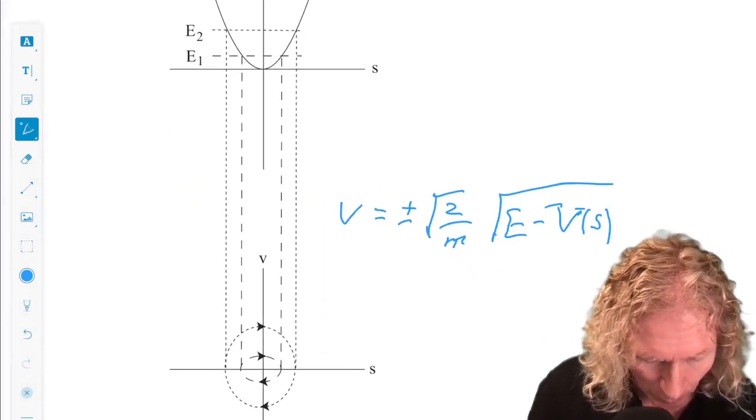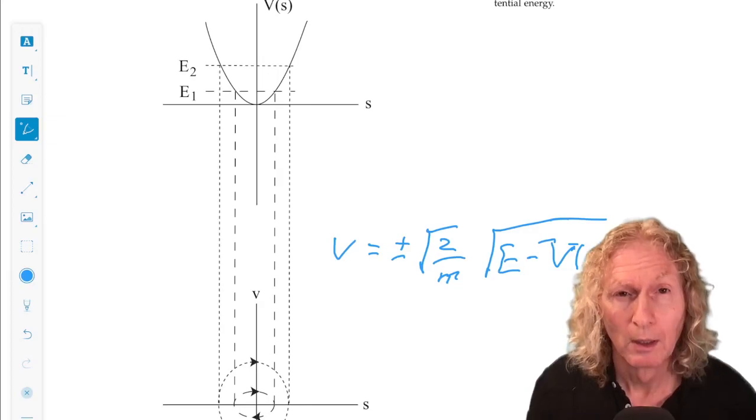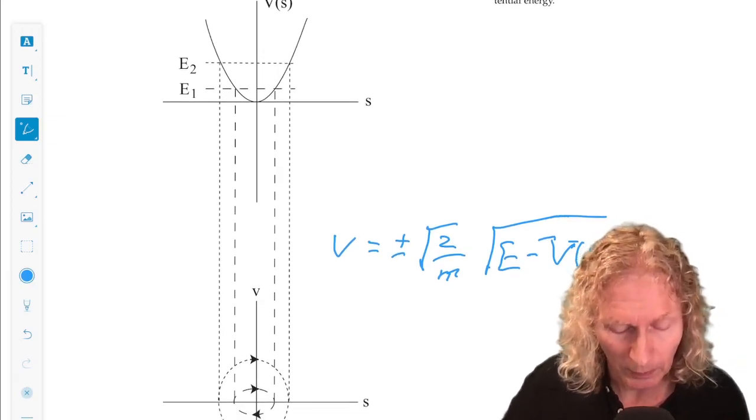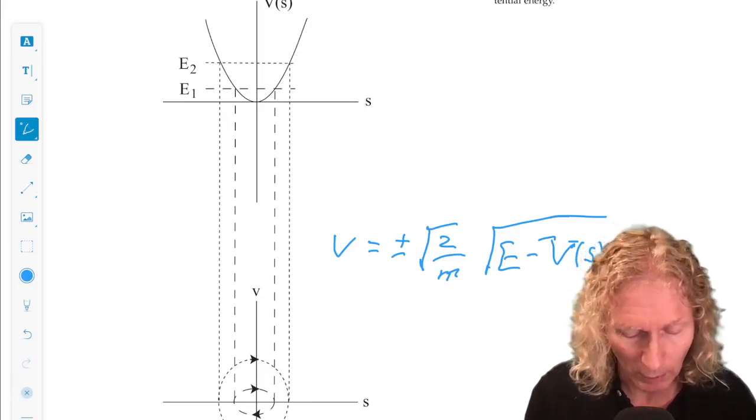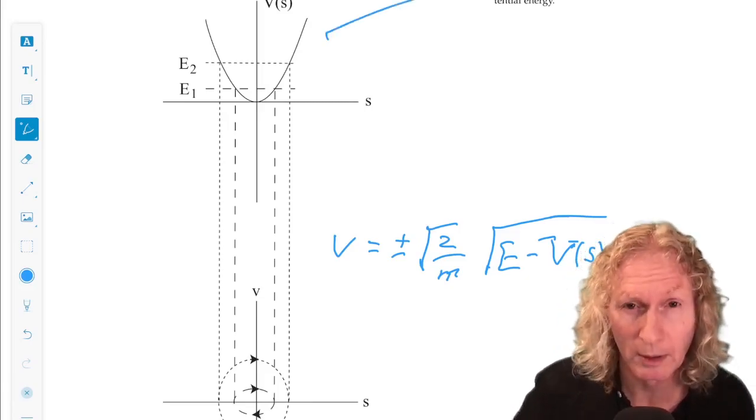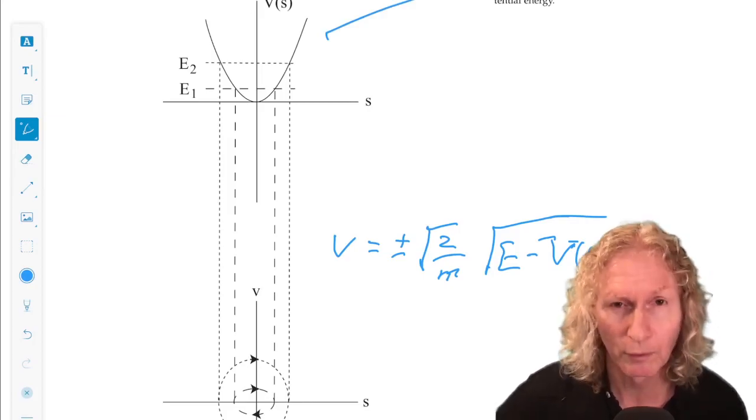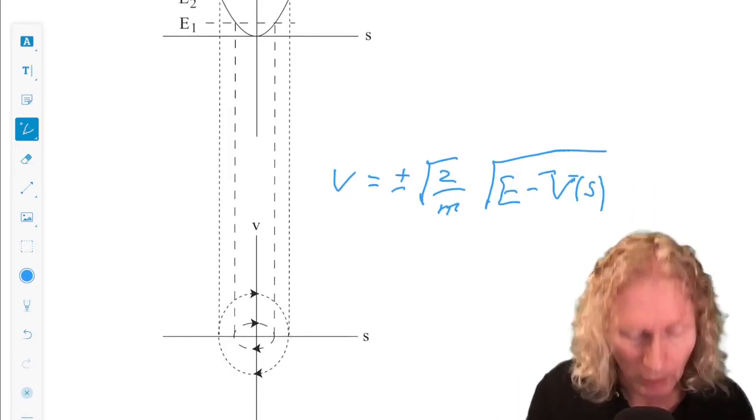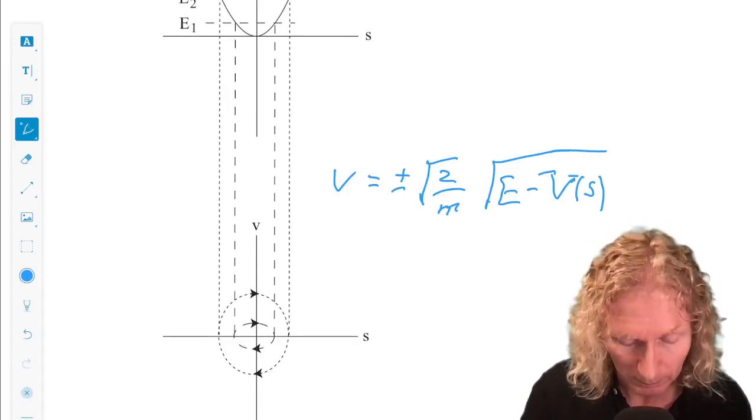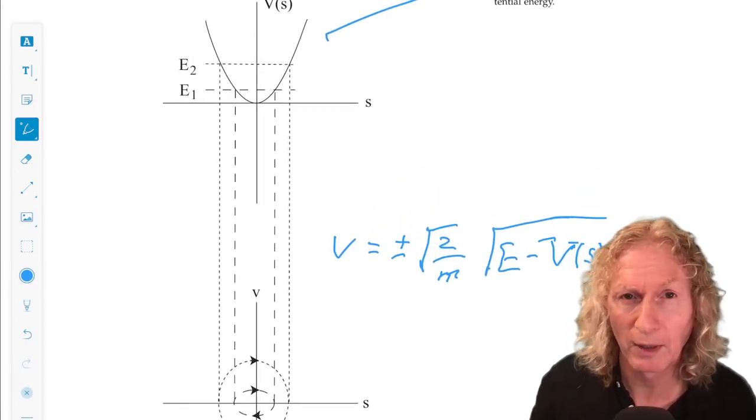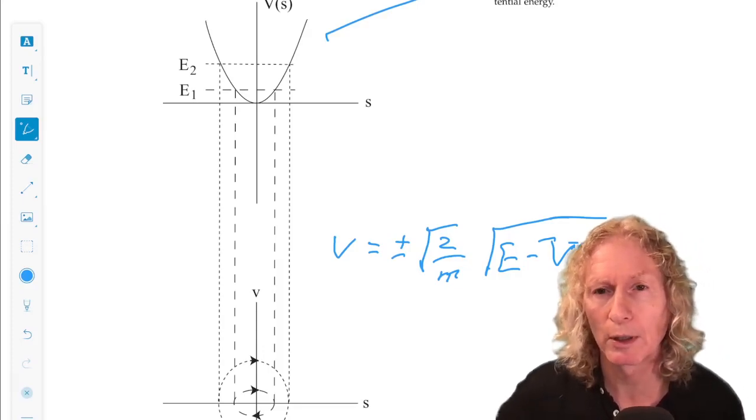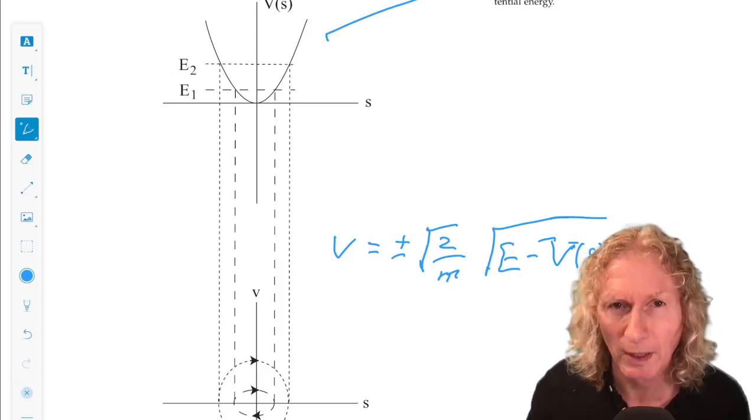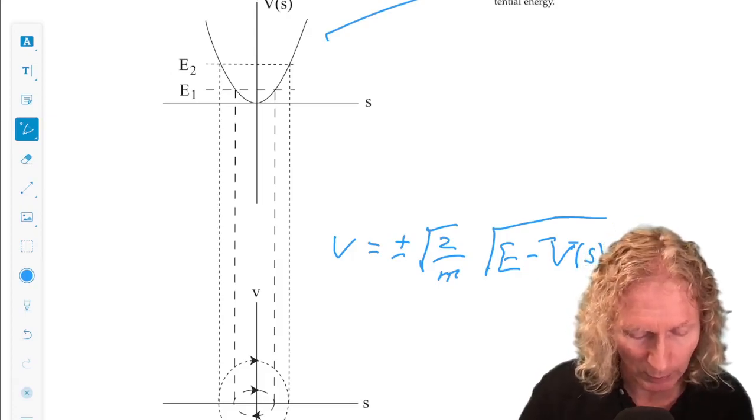Now, the way I draw this, there are two graphs on top of each other, the vertical axes are directly over each other. So I draw the potential energy function in the upper graph, V(s) vertical, s horizontal. And directly below it, I draw the sv phase plane. This is just an example of a potential energy function. Part of the power of this is I don't need a precise form. The geometry of V(s) is going to tell me what to do.